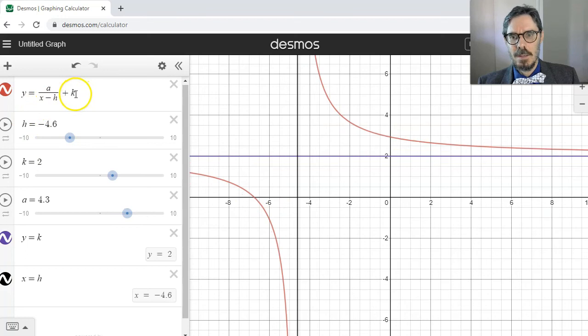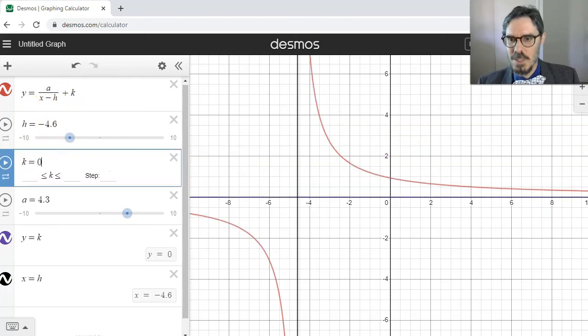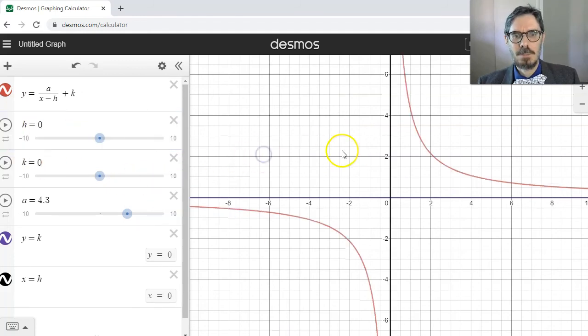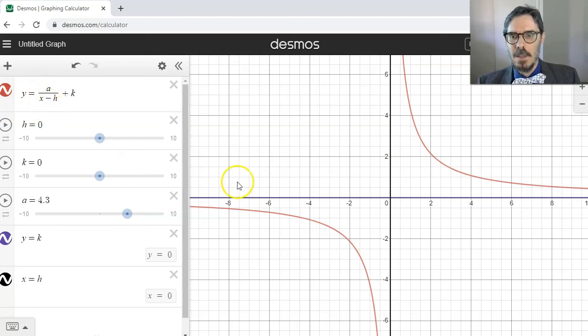The h and the k, which when I'm at the original position they were both 0, tell me the asymptotes. So if I'm centered, it's just y equals a over x. Then the asymptotes are y equals 0 and x equals 0.